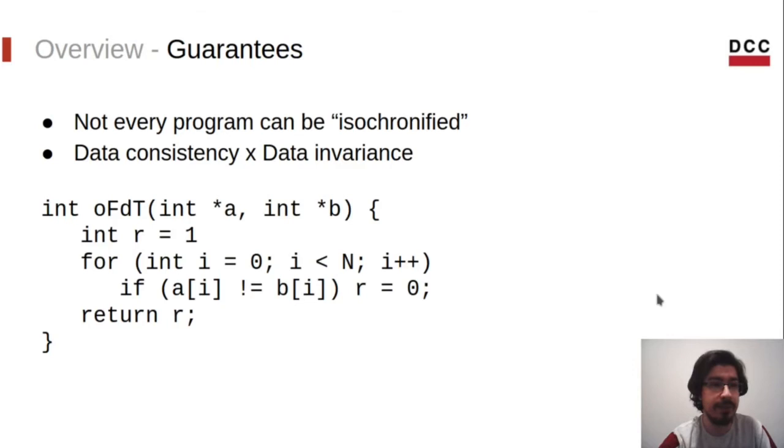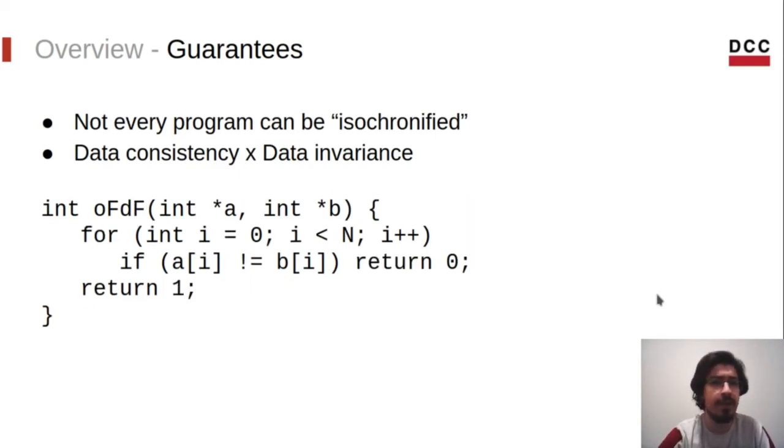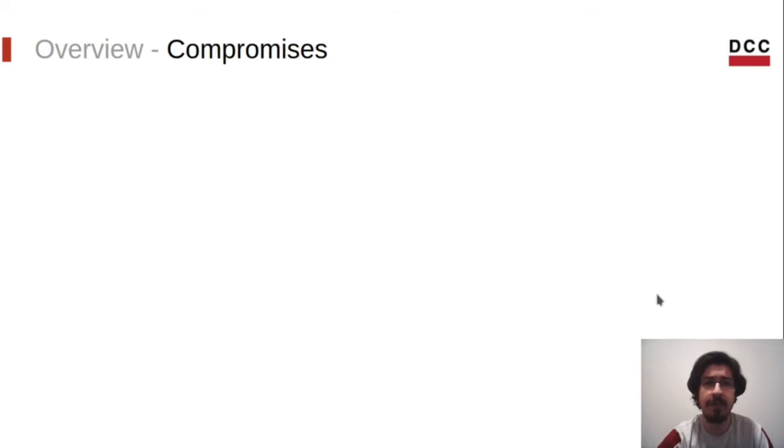Another example - OFDT is also data consistent, since it is data invariant. But what about OFDF, our original function? It is not data consistent, but also does not use a third array in the comparisons, like OTDF. So, can we transform it? The answer is sort of. We could fully isochronify it if we know that all memory accesses are safe, but that's not always possible. Thus, for this kind of programs, we need to make compromises.